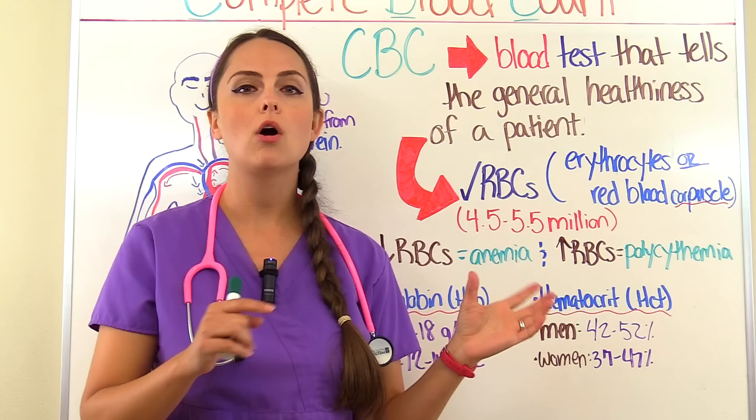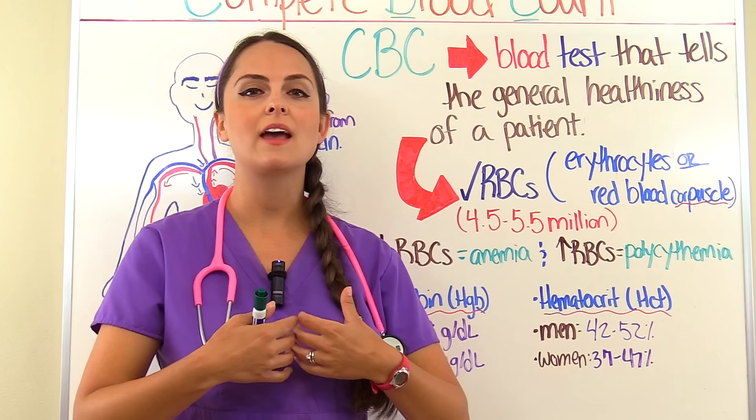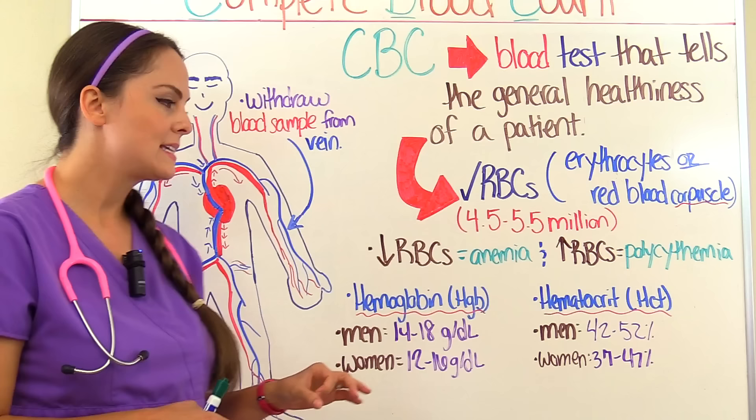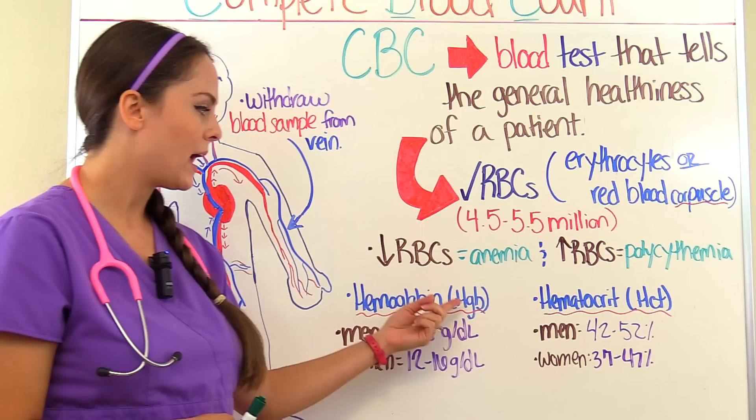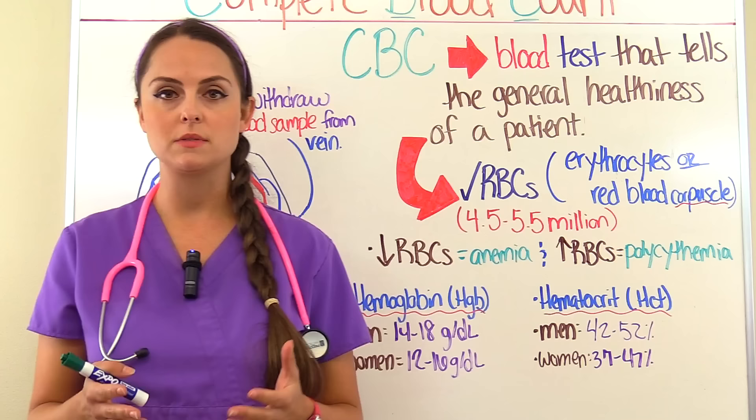The role of your red blood cell is to transport oxygen throughout the body and replenish your tissues, then carry carbon dioxide back to the lungs so they can exhale it. Hemoglobin is the protein found on the red blood cell that carries the oxygen, abbreviated as HGB. It differs for men and women: for men it's 14 to 18 grams per deciliter, and for women it's 12 to 16 grams per deciliter.